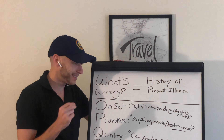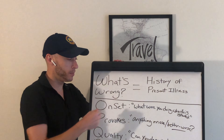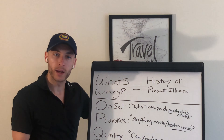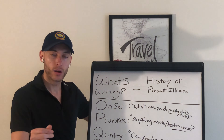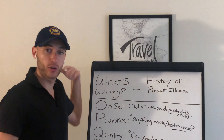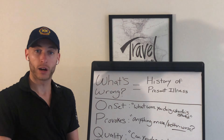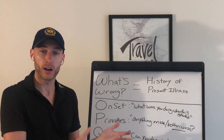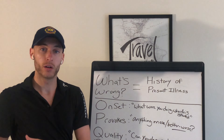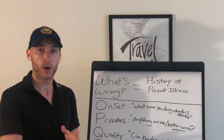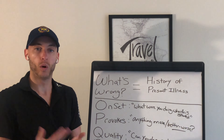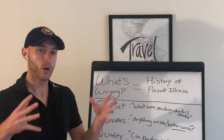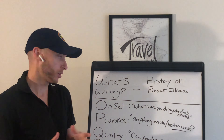For onset, you ask the patient: what were you doing when this started? Maybe they were walking on the beach, sitting in a chair, out on a run, or about to walk into an airport. What were they doing before and while this started? That's what you're looking at.